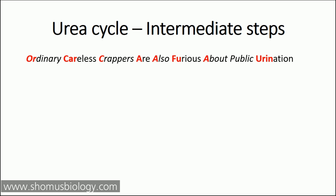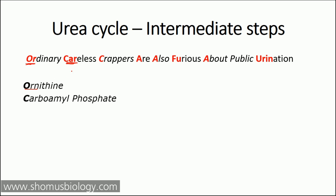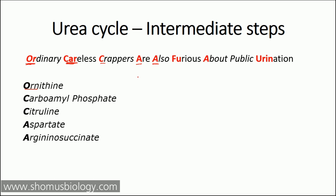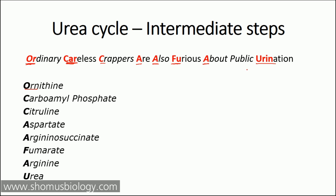The first letter 'O' stands for ornithine, the second 'C' for carbamoyl phosphate, the third 'C' for citrulline, the fourth 'A' for aspartate, the fifth 'A' for arginino succinate, then 'F' for fumarate, then 'A' for arginine, and the last letters for urea — because it ends with urine, obviously it's urea.